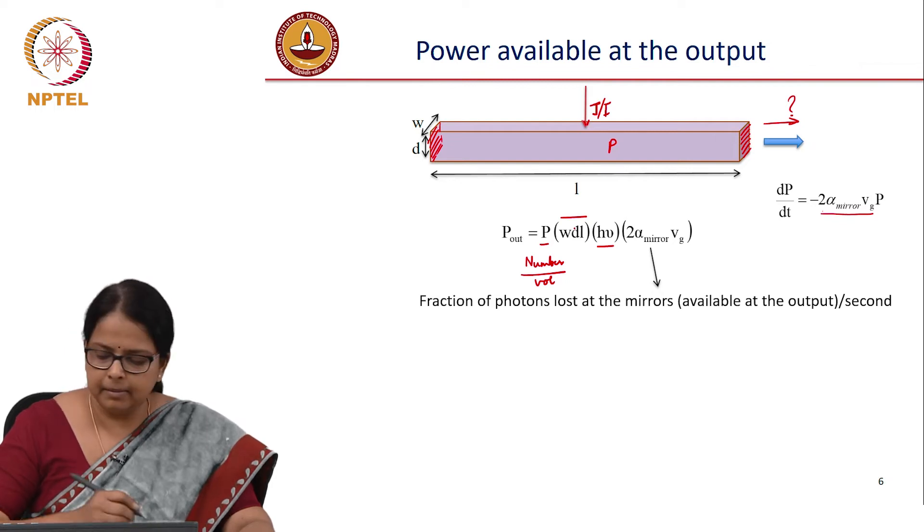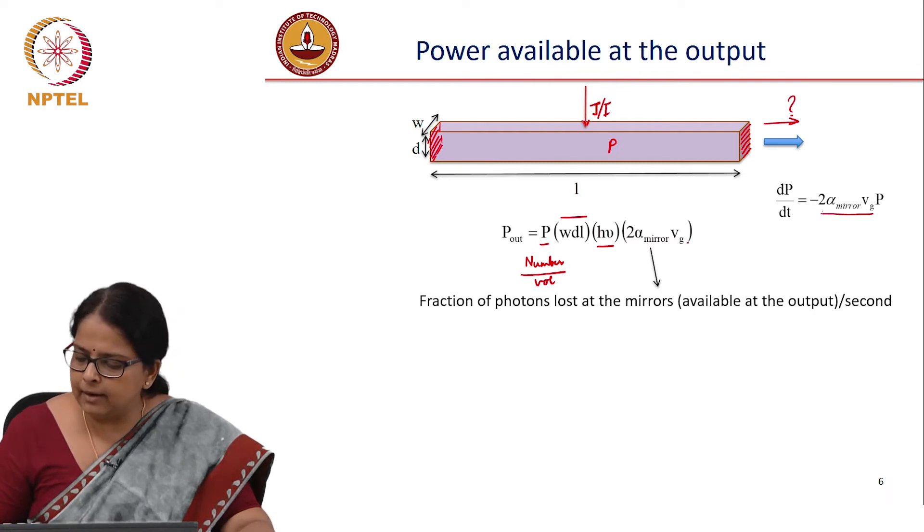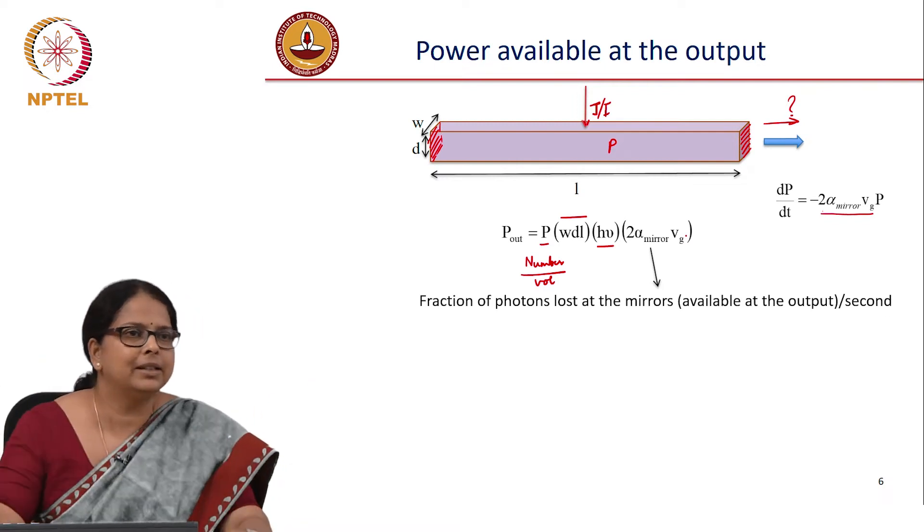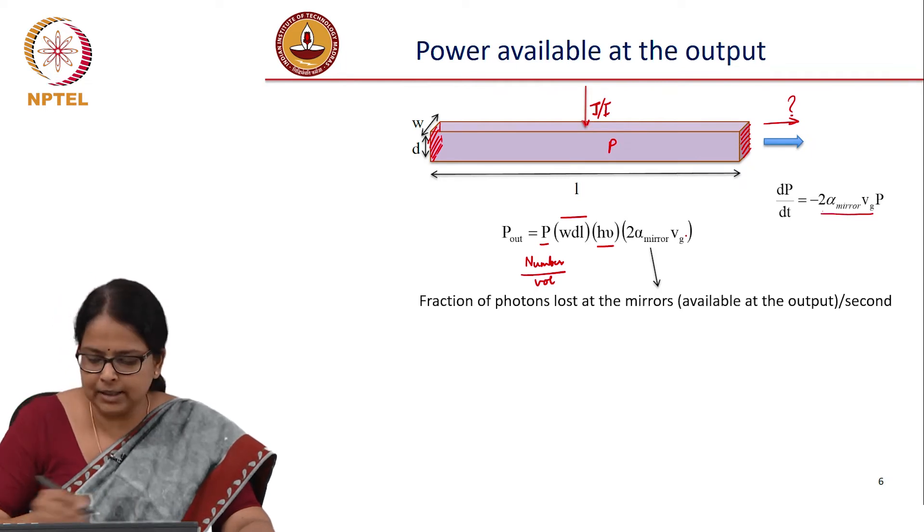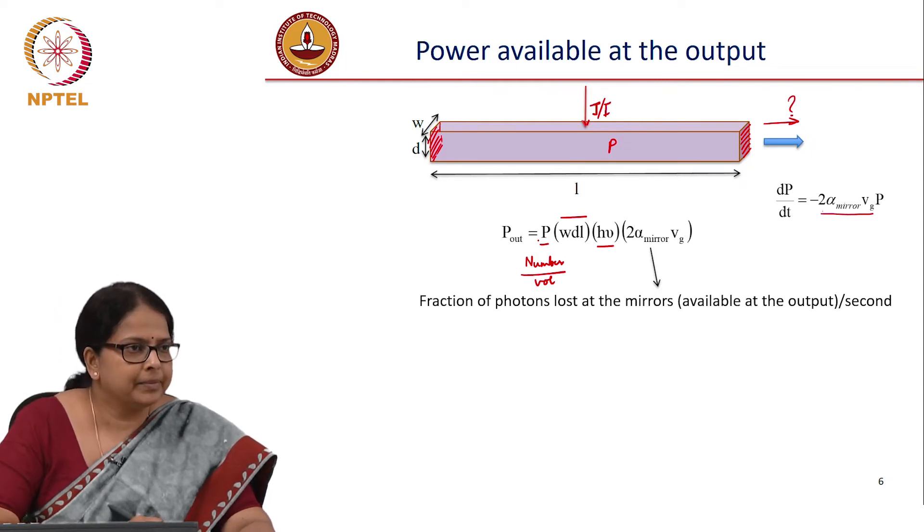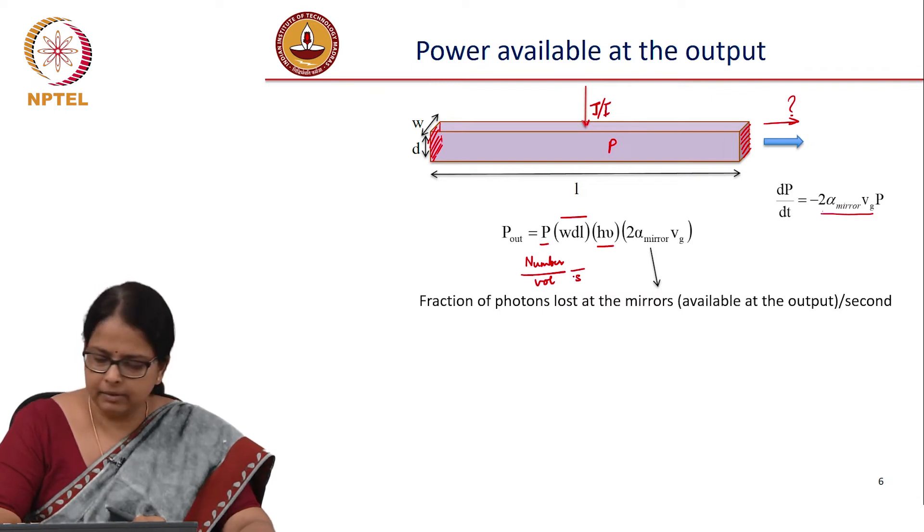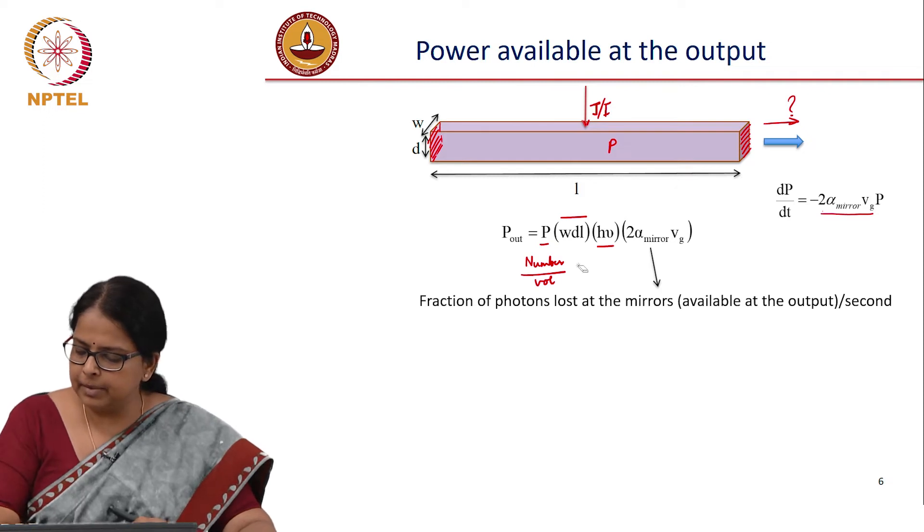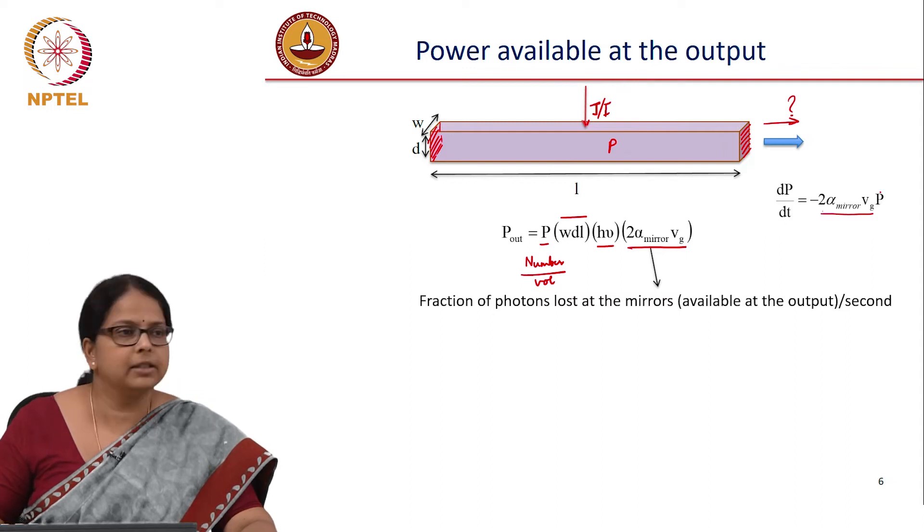P is number per volume, you multiplied with volume so you got the number, number of photons. Multiplied by energy of photon is hν, multiplied by 2α_mirror V_g is the power lost in the cavity, which is what is the power that is available at the output. Sorry, this is the energy available per second because this P is per second—number per volume, number density per second. Well, P is number, sorry, so this is number per volume.